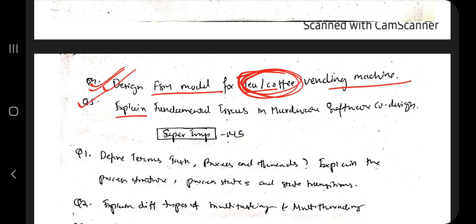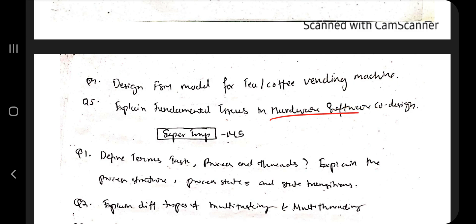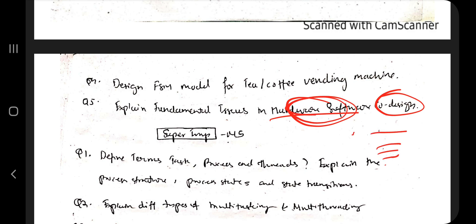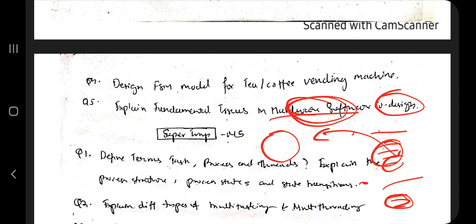Coming to the last question: explain the fundamental issues in hardware-software co-design. There are some issues that arise when you co-design, and you have to mention them point by point — what the issue is and why it is an issue. You also have to mention examples, how the issue can be overcome, and what alternate solutions you can use.